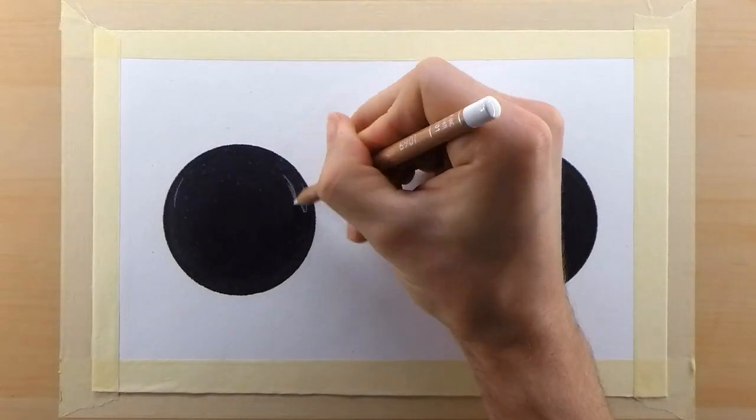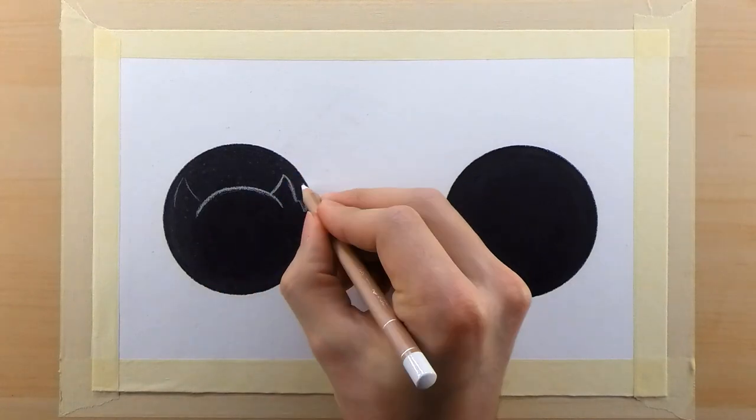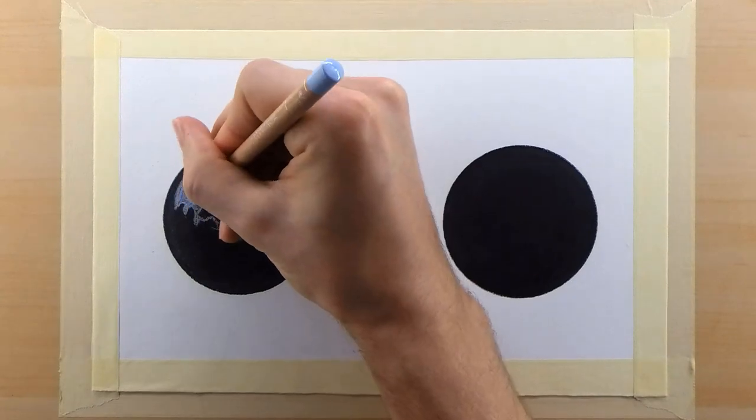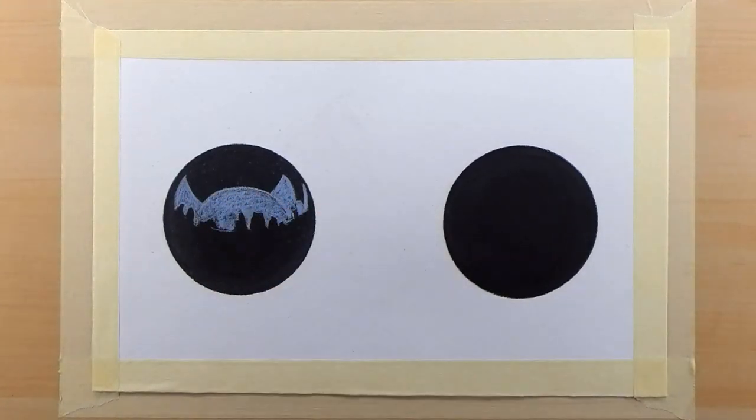So what I've done here is burnished two black circles, because building up any other details on top of these black circles would be next to impossible once they're burnished.